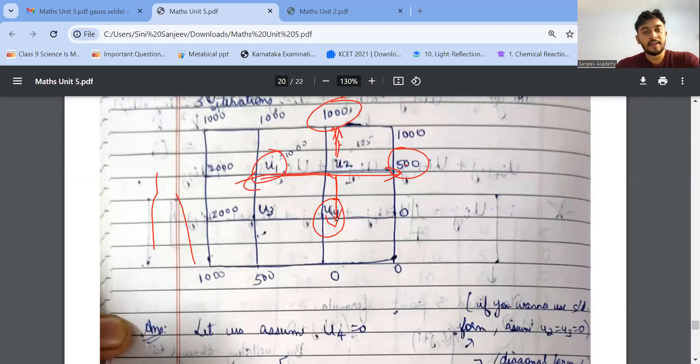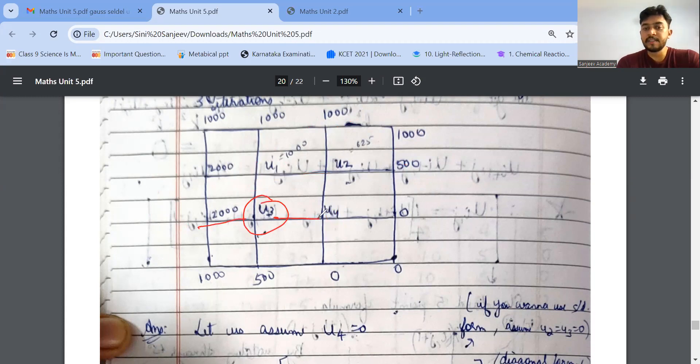Now coming to my U3. Add these things: 2000 plus 2000 plus 500 plus U4 plus 1000. 1 by 4 into. This is my 0. So my U3 also I'll be getting. Very easy. U4 also same thing. Add 0 plus U2 value, that plus U3 plus 0. That's all. So like that, I will be getting my U4.